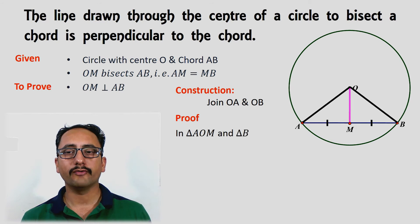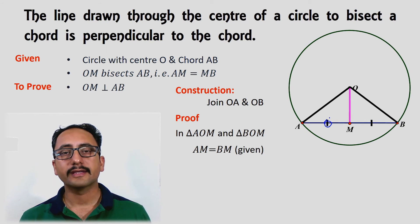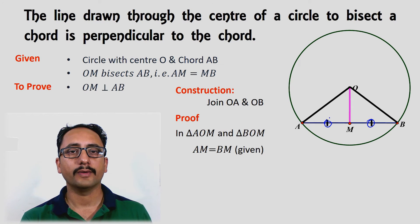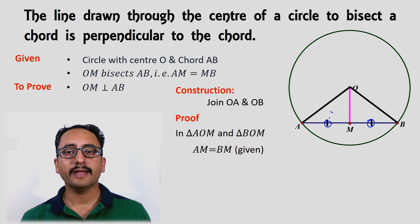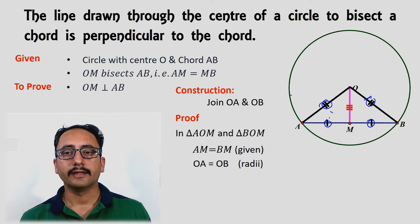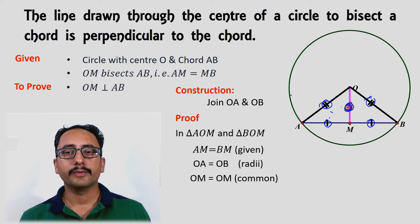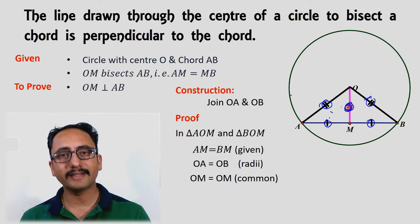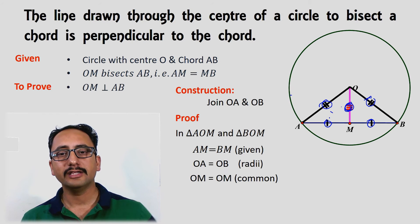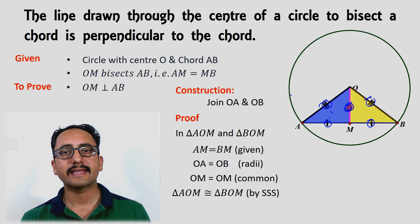First, AM equals MB because M is the midpoint — given since OM bisects AB. Second, OA equals OB as they are radii of the circle. Third, OM equals OM as it is the common side of both triangles. Hence the corresponding sides of one triangle equal the corresponding sides of the other, so the triangles are congruent by SSS.